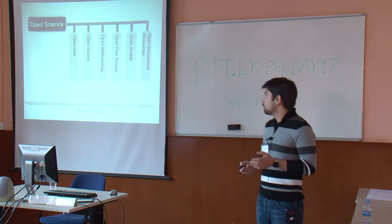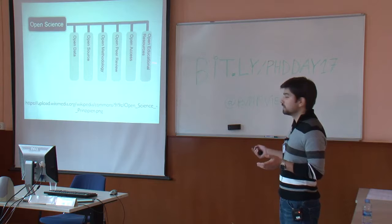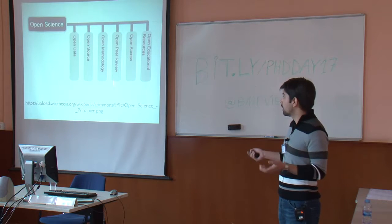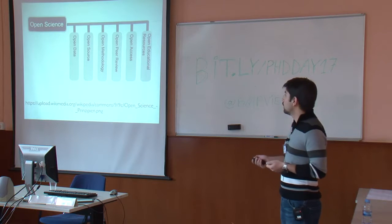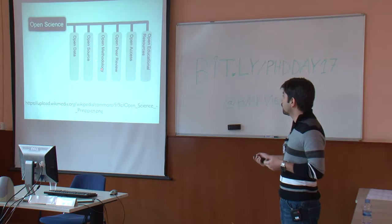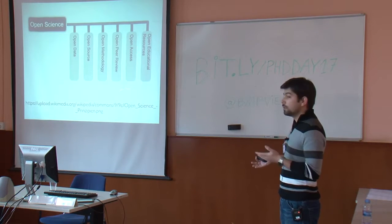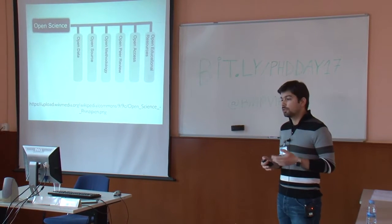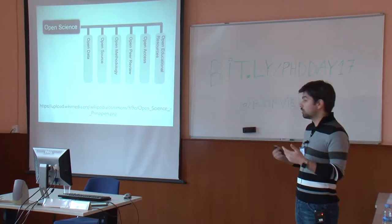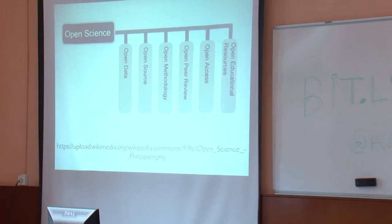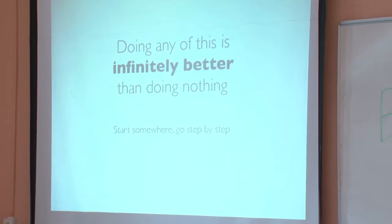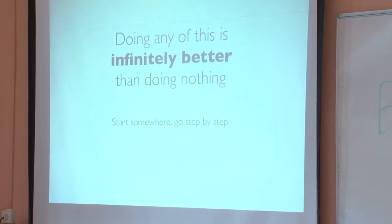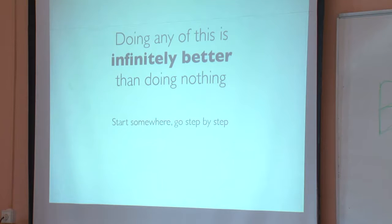Open science encompasses many things: open data, sharing your code or methods to generate results, open peer review, publishing in open access journals, and making educational resources openly available. Doing any of these is better than doing nothing. You don't have to do all of it — if you start with one small thing and move to the others, that's better than not doing it at all.